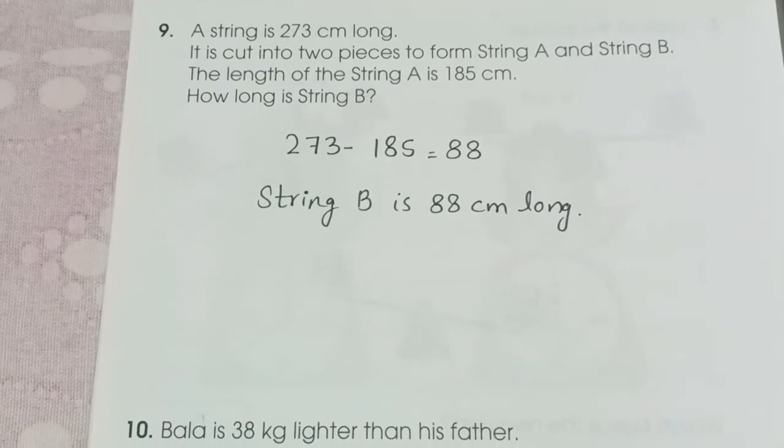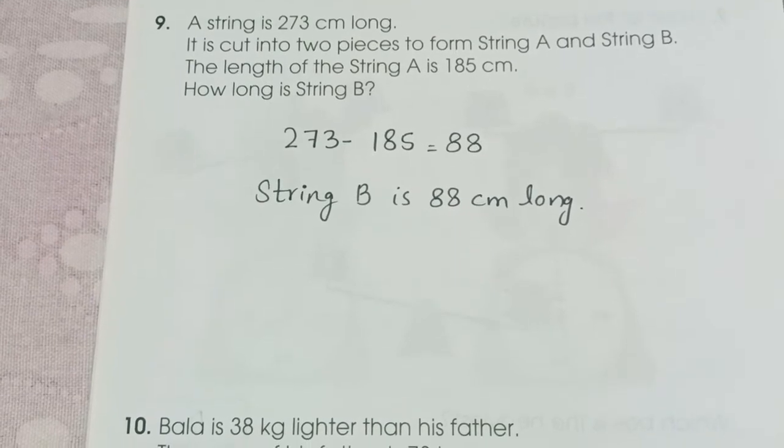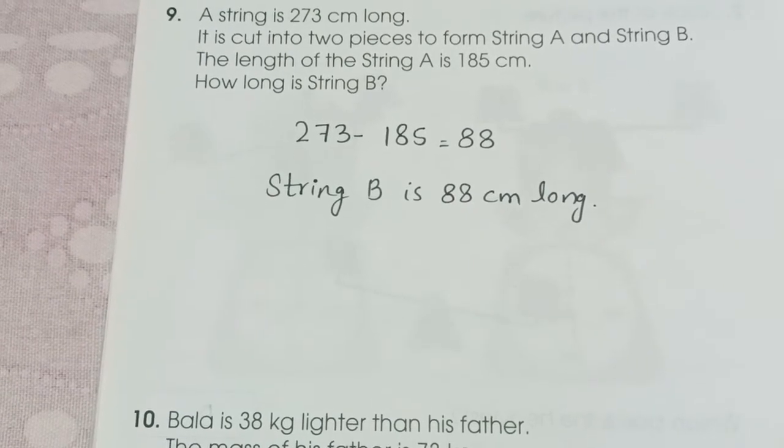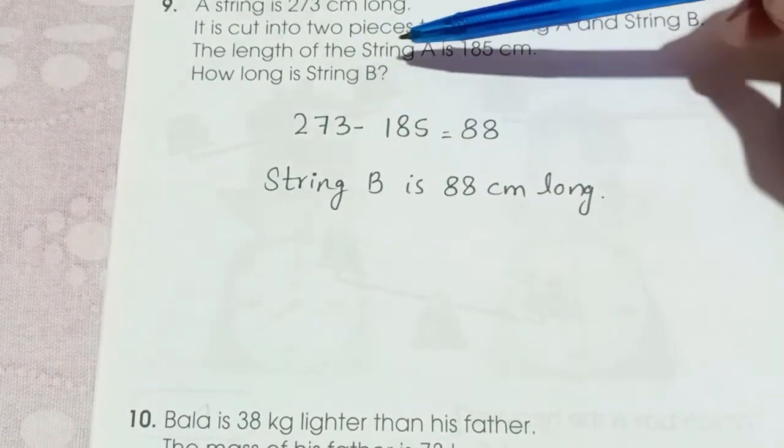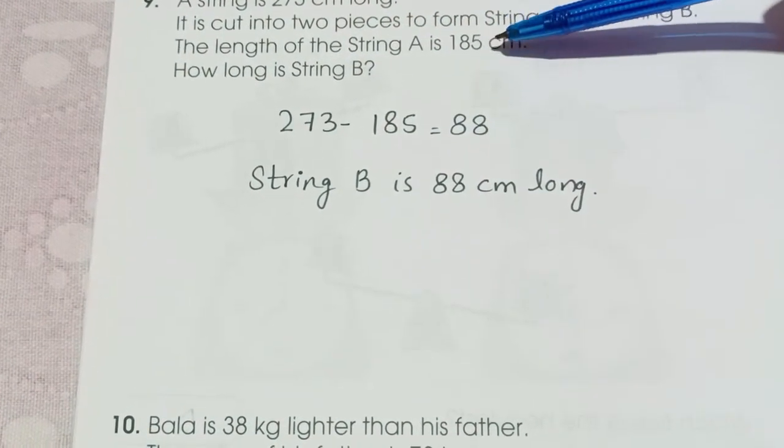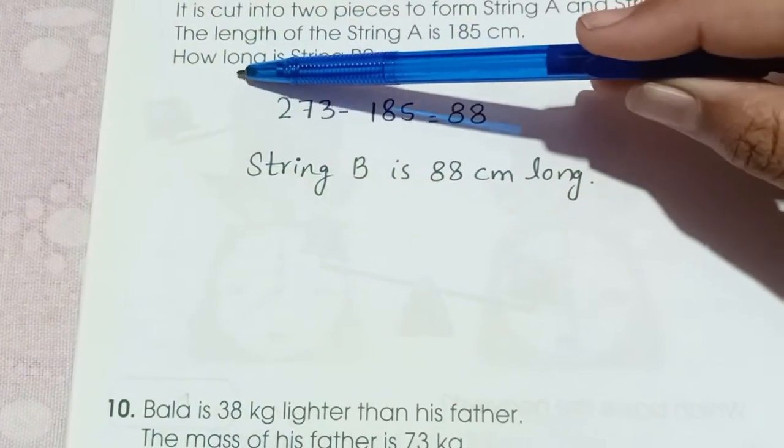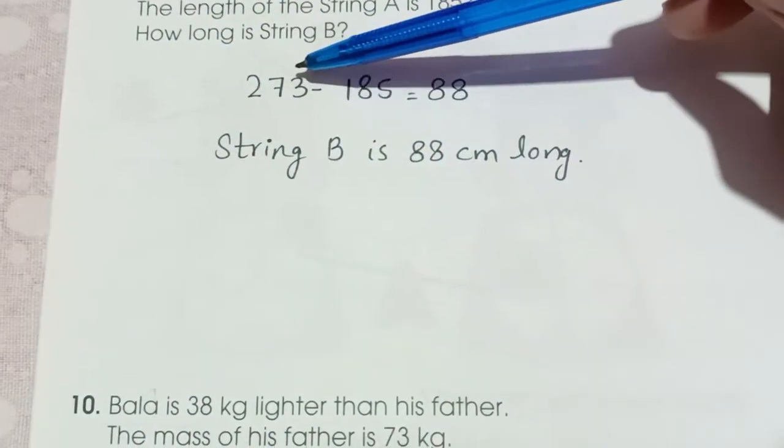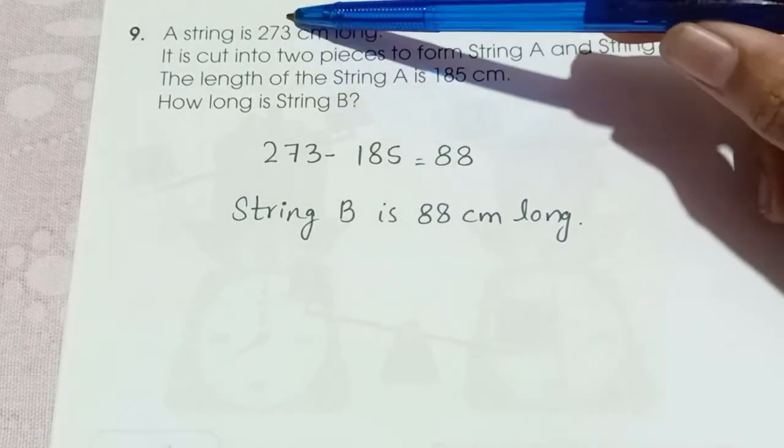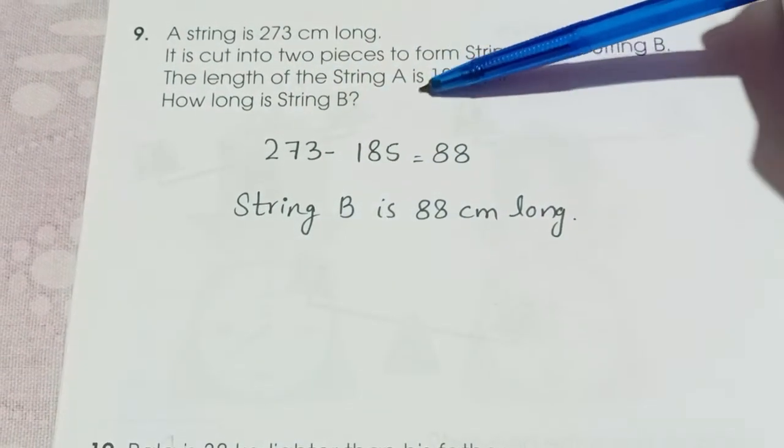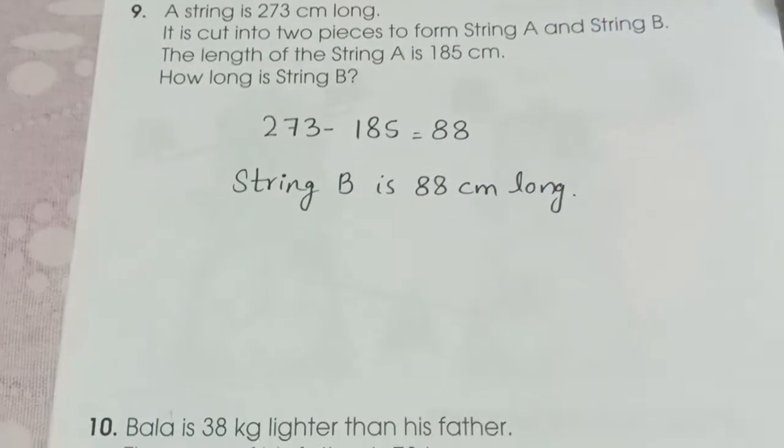Question number 9. A string is 273 centimeters long. It is cut into 2 pieces to form string A and B. The length of the string A is 185. How long is the string B? 273 minus 185. Because from 273 we cut 185. So the remaining is 88.